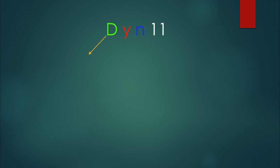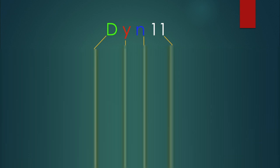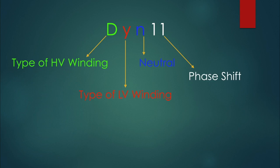The first letter which is mentioned in capital indicates the type of high voltage winding. The second letter indicates the type of LV winding. The third letter indicates the LV winding has neutral point as well and the numbers indicates phase shift between them.